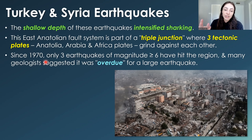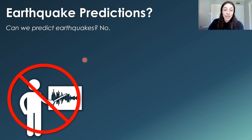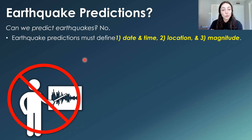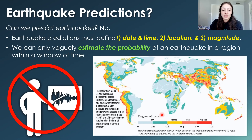Since 1970, only three magnitude-six-or-greater earthquakes have occurred in this region, and many geologists were suggesting it was overdue for a large earthquake. But why couldn't they have predicted exactly where and when it was going to occur? This leads us to the question: can we predict earthquakes? The answer is simply no. According to the USGS, earthquake predictions must define the when, the where, and the how big. But right now we can only vaguely estimate the probability of earthquakes in certain regions within certain windows of time using earthquake probability or hazard maps — still very vague.